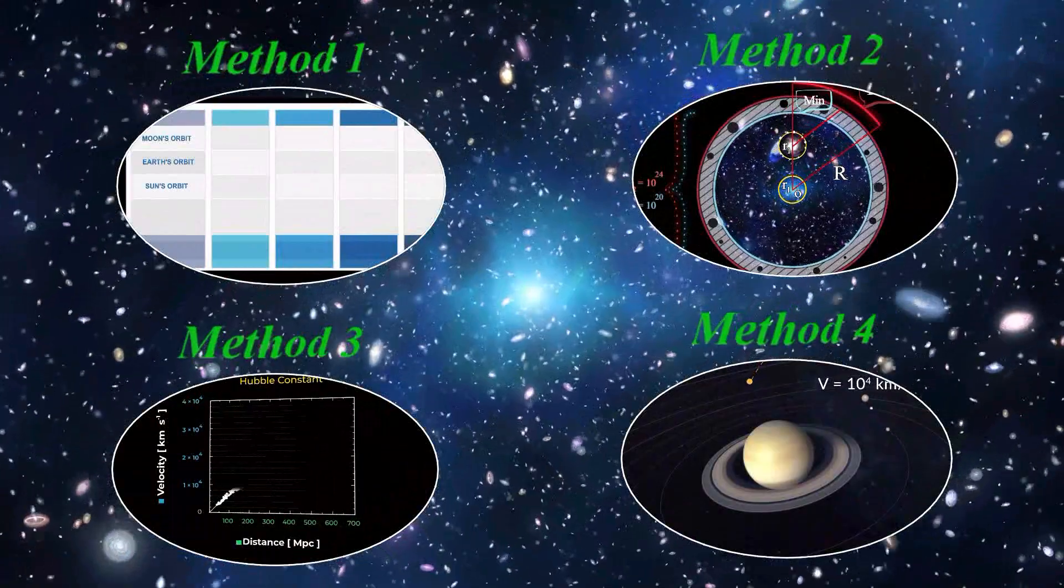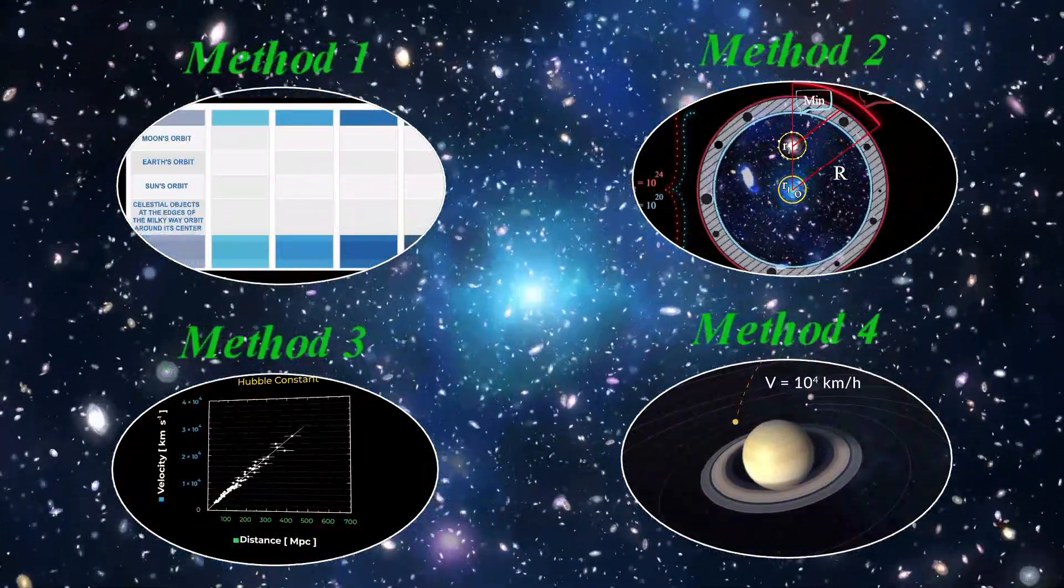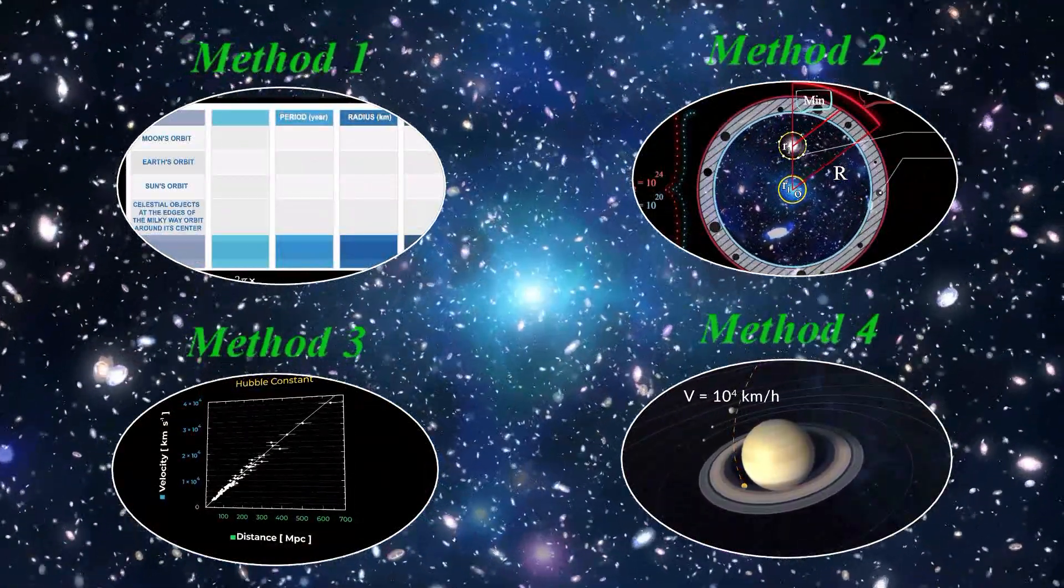Now we are going to study the speed of celestial objects at the hypothetical edges of the universe in four different methods.